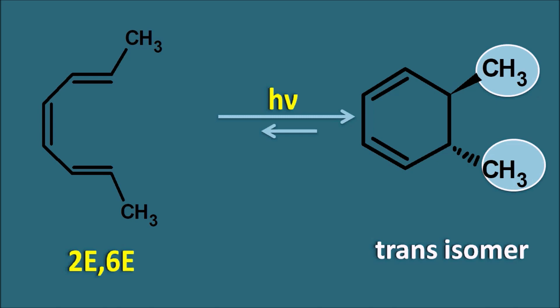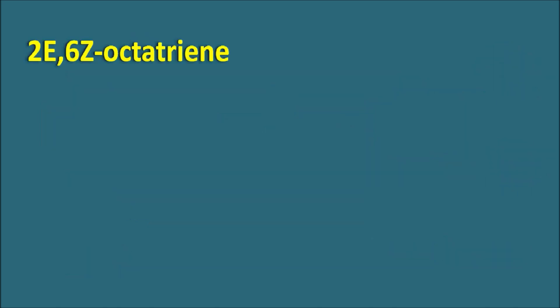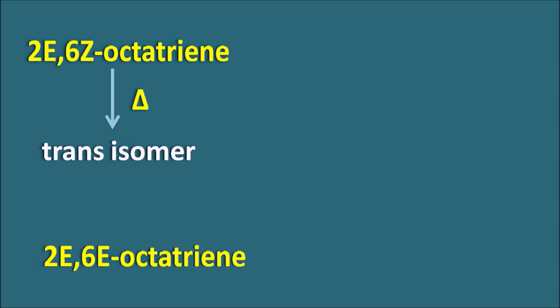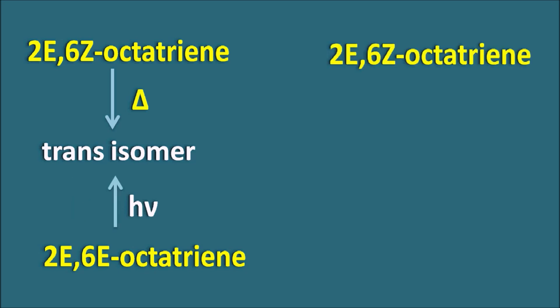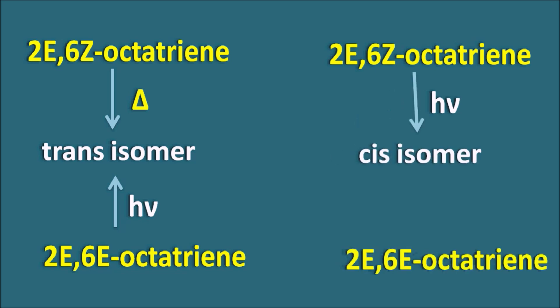Let us summarize the octatriene results: 2E6Z octatriene on supply of thermal energy gives the trans isomer. 2E6E octatriene on photo energy also gives the trans isomer. 2E6Z octatriene on photo source gives the cis isomer. And 2E6E octatriene on thermal energy gives the cis isomer.